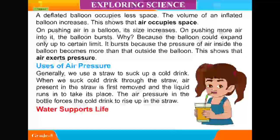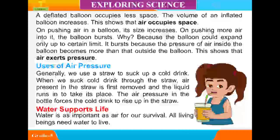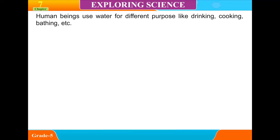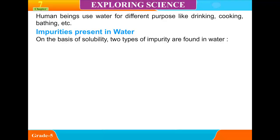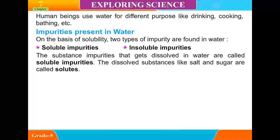Water is as important as air for our survival. All living beings need water to live. Human beings use water for different purposes like drinking, cooking, bathing, etc. On the basis of solubility, two types of impurities are found in water: soluble impurities and insoluble impurities. The substances that get dissolved in water are called soluble impurities.